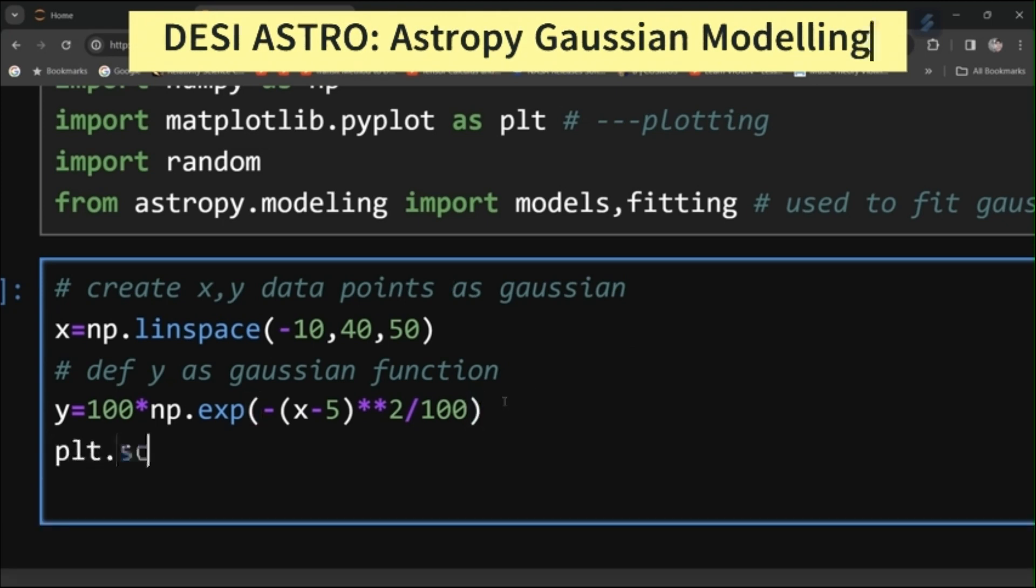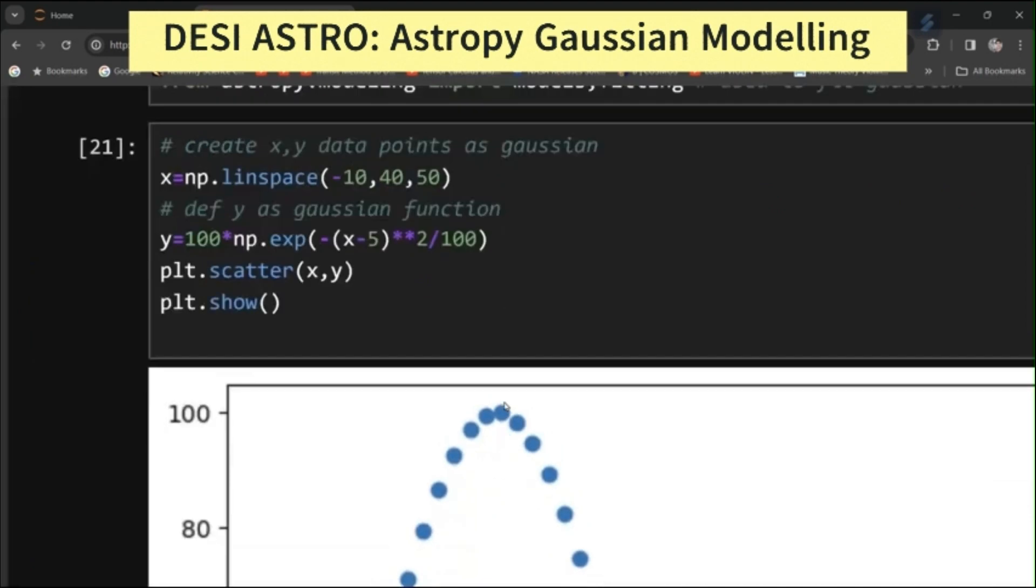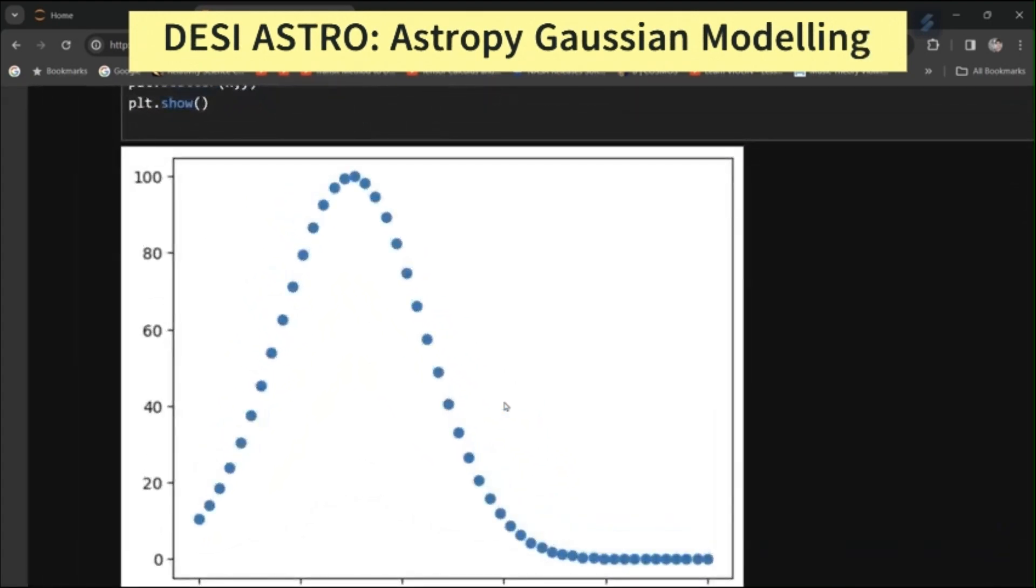Now plot it simply. Just type here plt.scatter and pass your x comma y and put here plt.show. So this will show your simple plot. Here is your Gaussian.